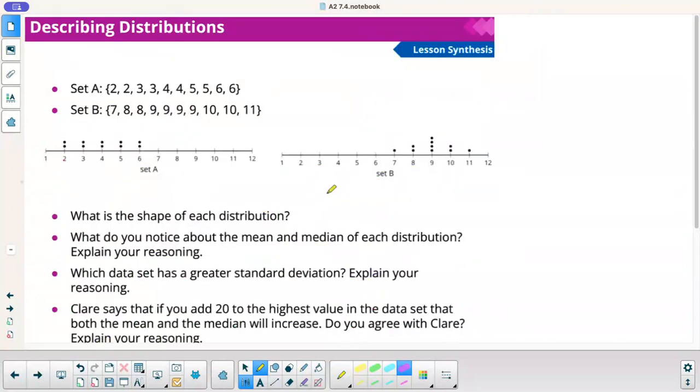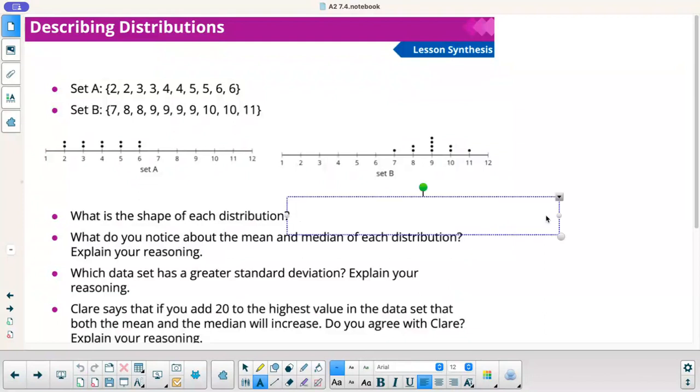Data here. We got set A, got set B. They plotted them on a dot plot. What's the shape of each distribution? When I look at the first one, I could say that A is uniform, set B is bell-shaped. I would say that they're both symmetric.